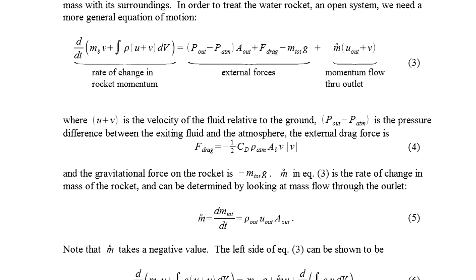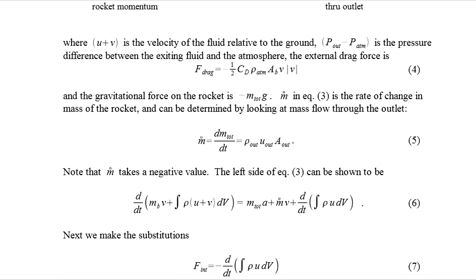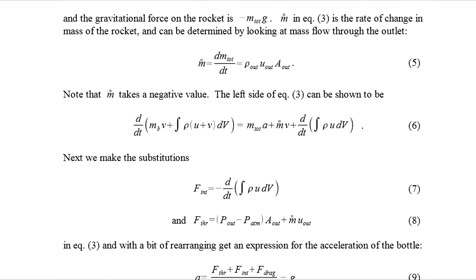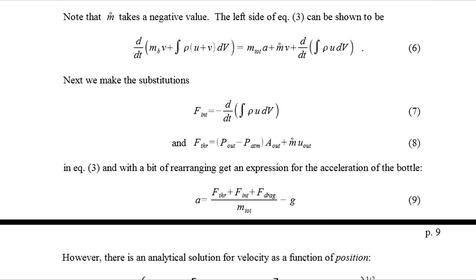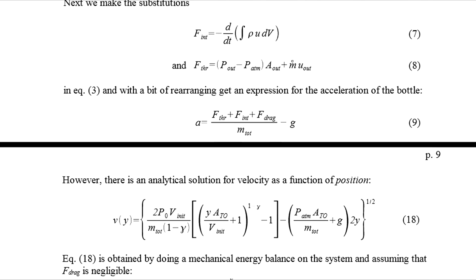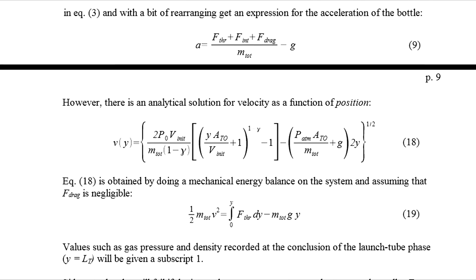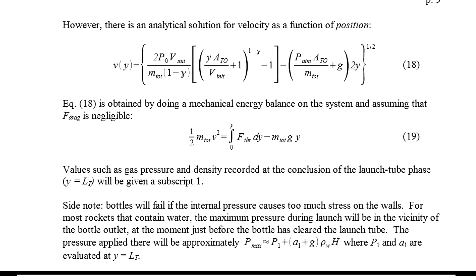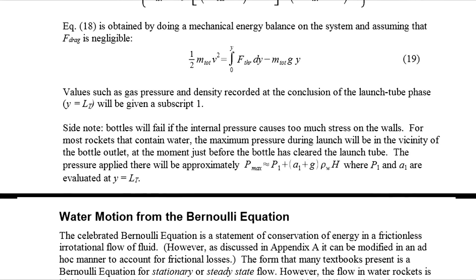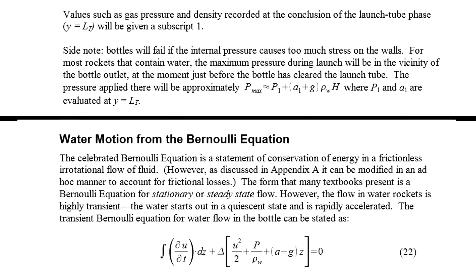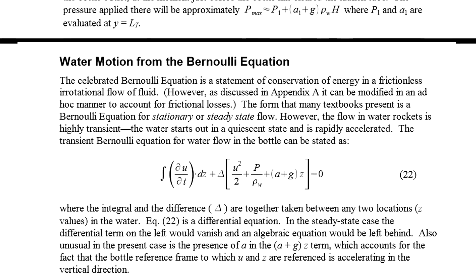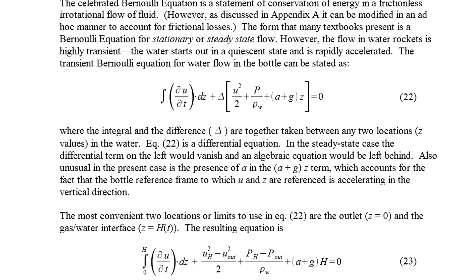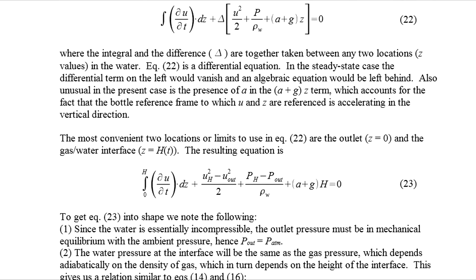The actual mathematics behind how a water rocket behaves in flight and how maximum altitude can be estimated is a lot more complicated, and I highly recommend Dean Wheeler's detailed analysis on this subject. I've put a link in the description.